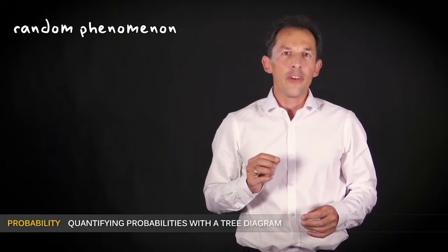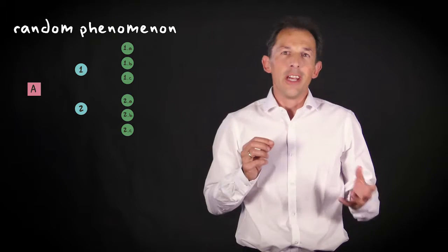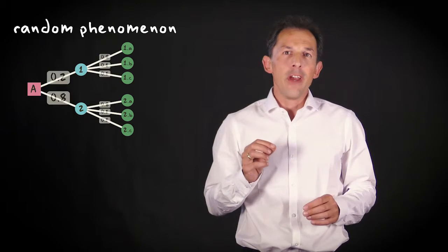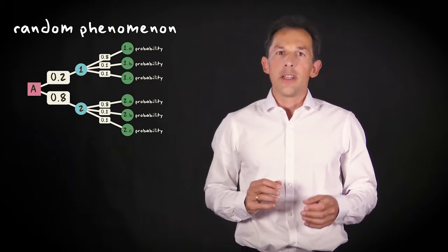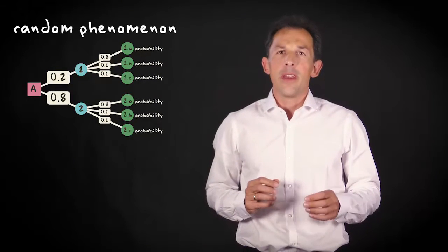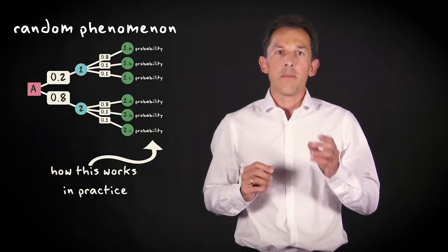When you have thought about a random phenomenon and put your ideas about relationships between events and the probabilities in a tree diagram, you can start to make probability calculations and assess the likelihood that a certain event occurs. Here I will explain how this quantification of probability with the tree diagram works in practice.